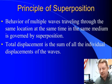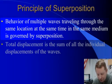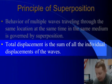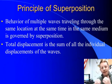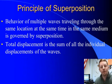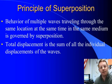Superposition says that the behavior of multiple waves traveling through the same location at the same time in the same medium is governed by superposition. That is, the total displacement is the sum of all the individual displacements of the waves. Or to put it much more simply, when two waves meet, you add their amplitudes together. As they pass each other, they keep going as if they had never met. Really simple concept.